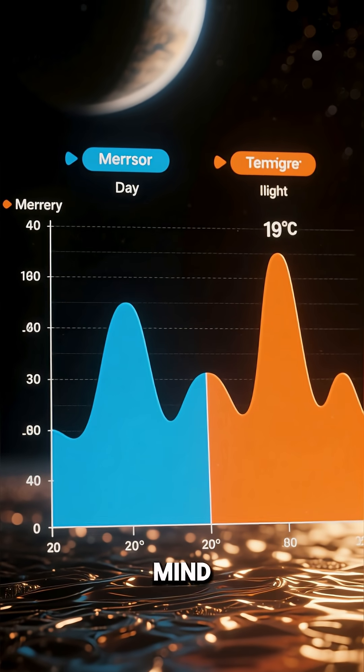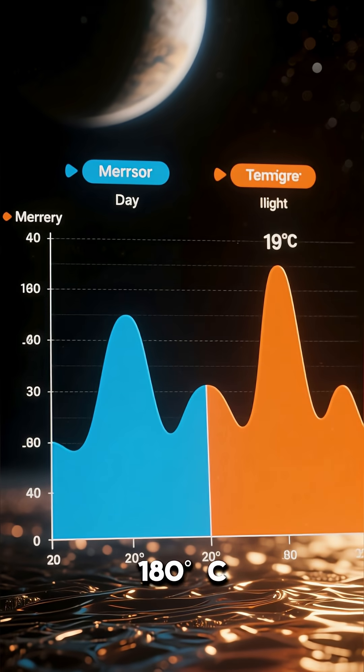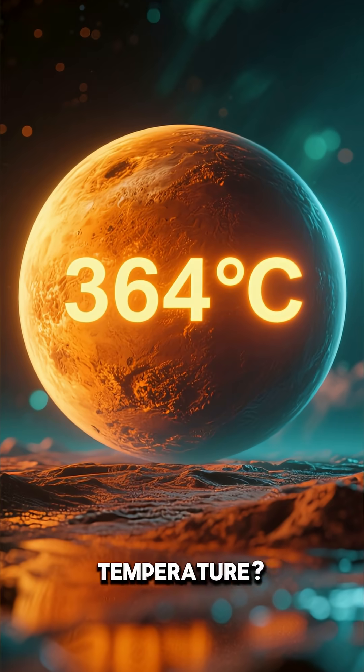But at night, it drops to a mind-blowing minus 180 degrees Celsius. And Venus's temperature, it never changes from 464 degrees Celsius, day or night.